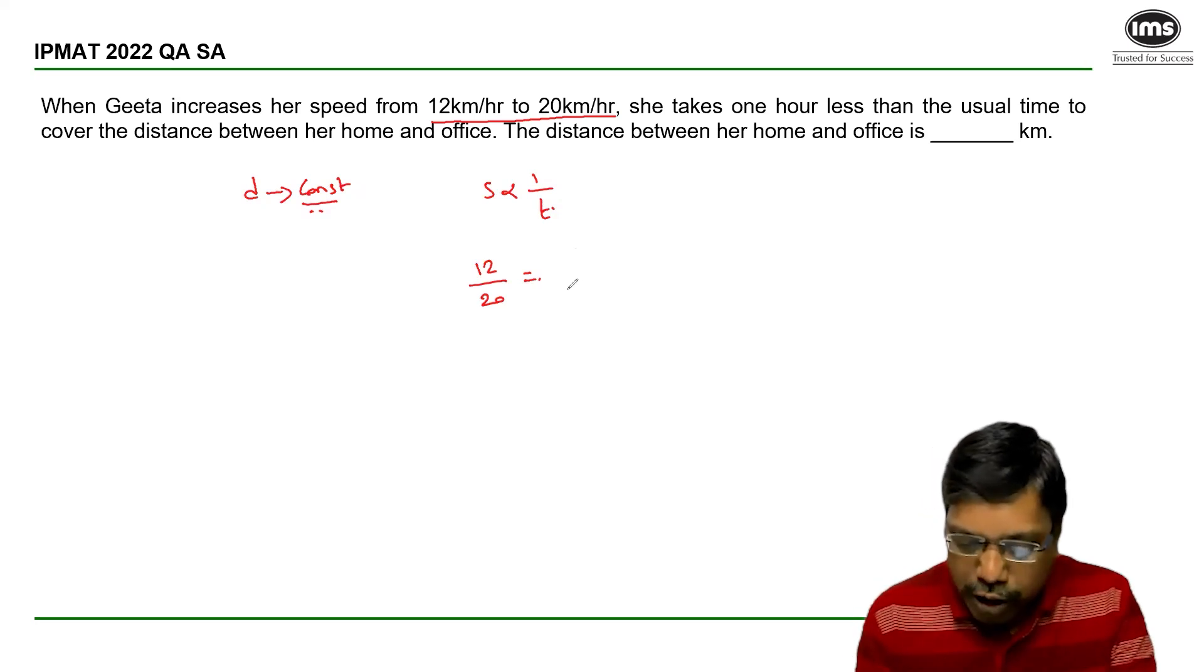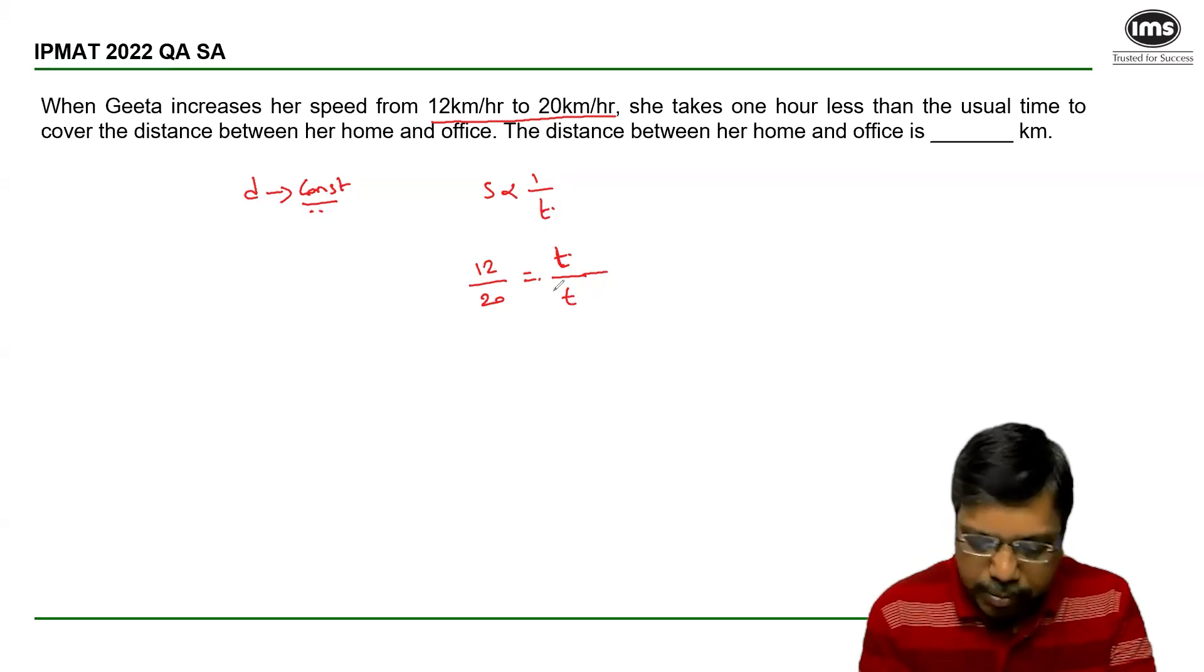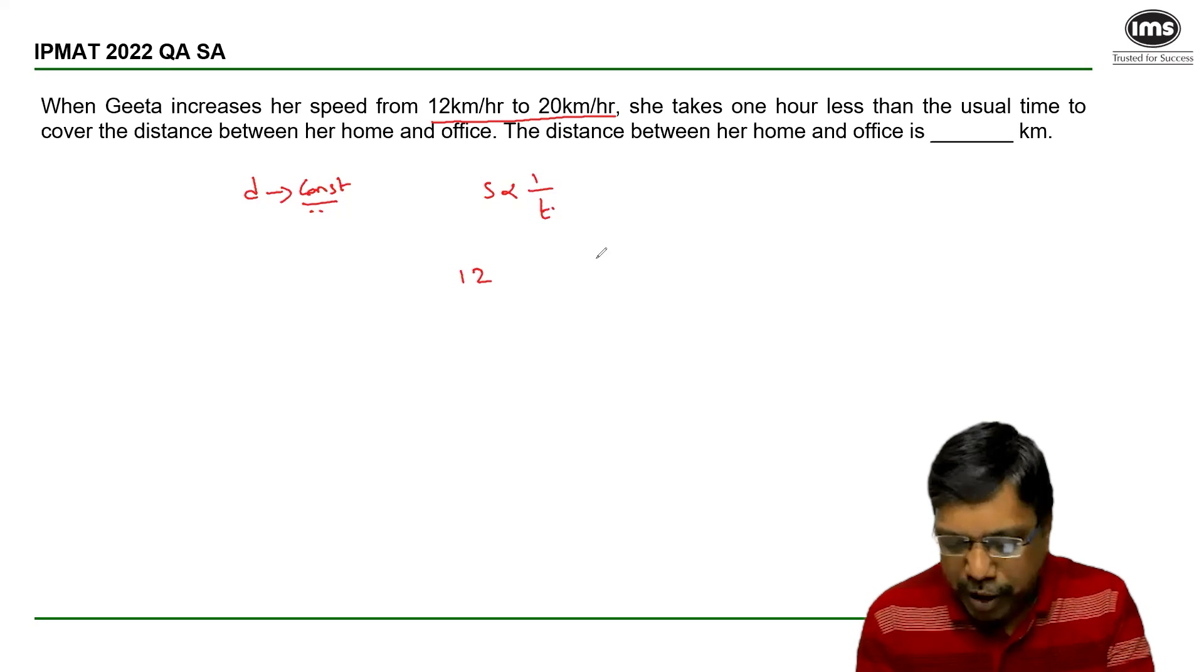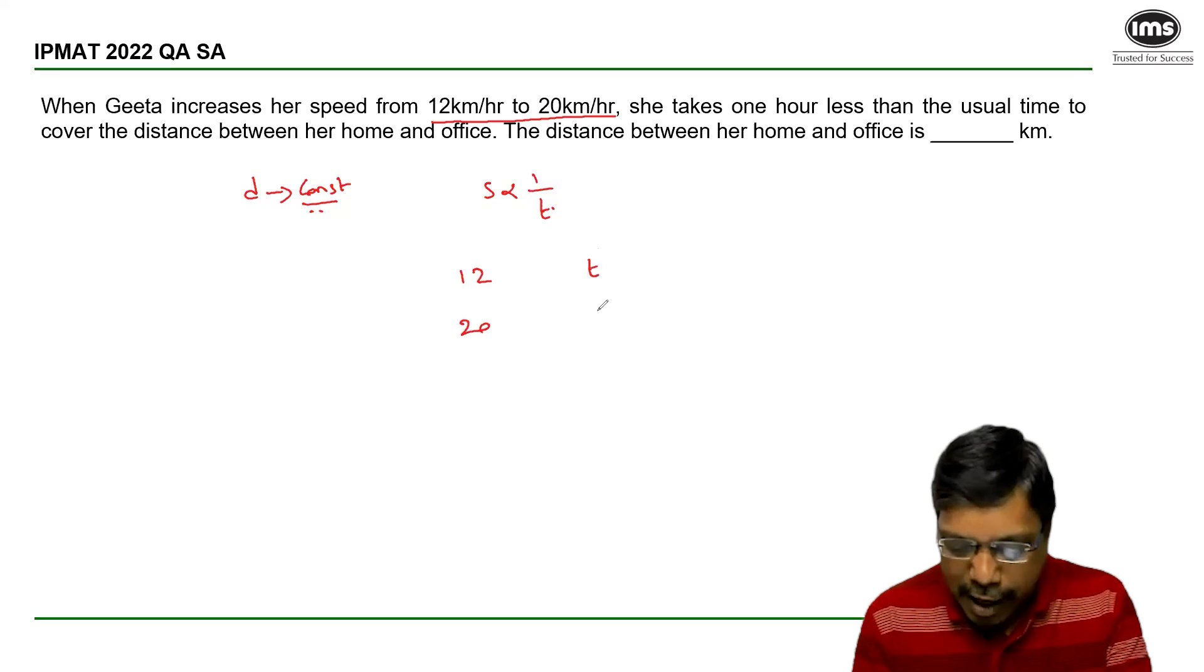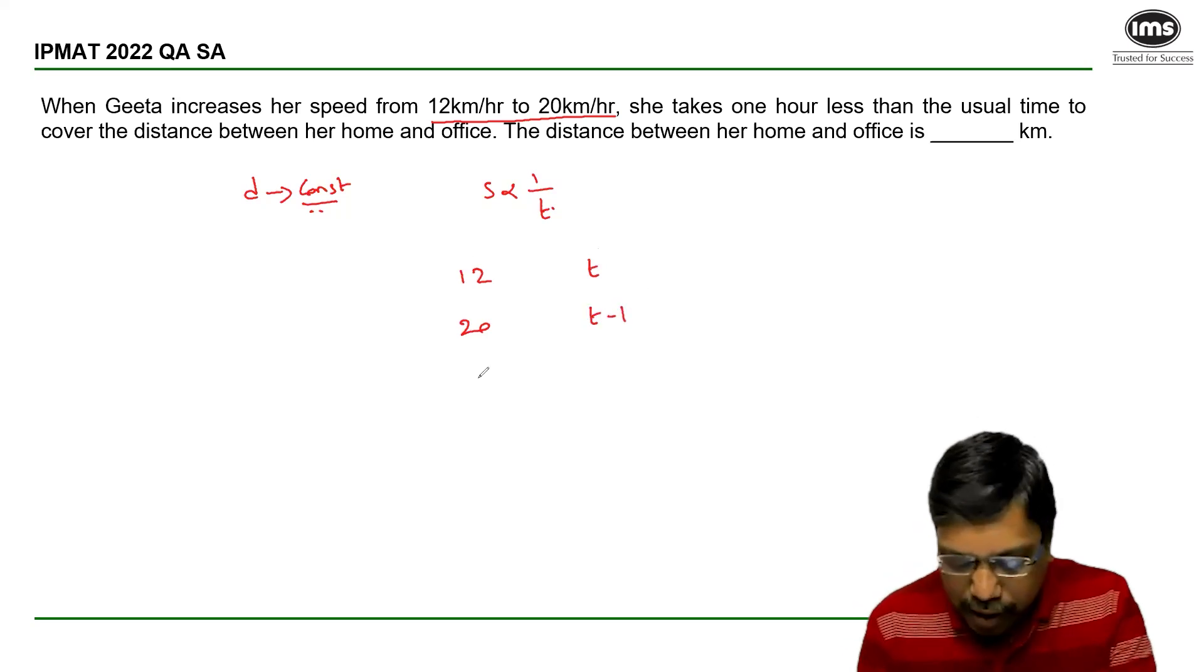If the original time taken is t, then the time taken now is t minus 1. Let me make one more step here. In the first case, when the speed is 12 kmph, the time taken is t hours. If the speed is increased to 20 kmph, the time taken reduces by 1 hour.